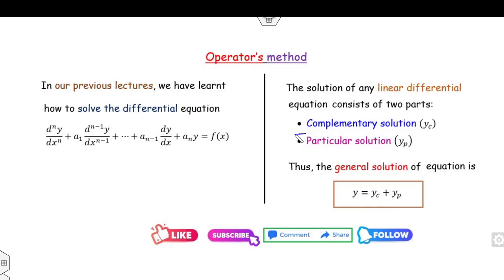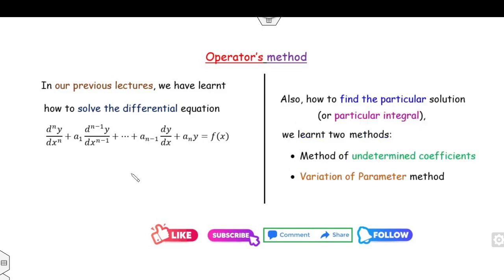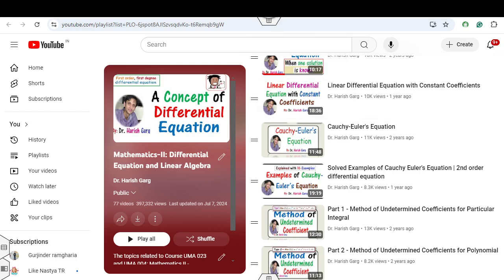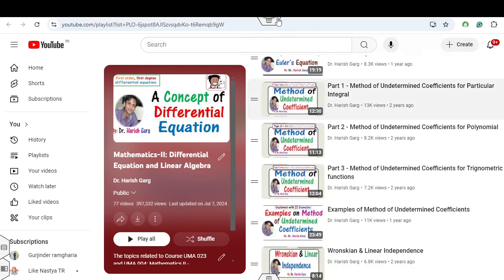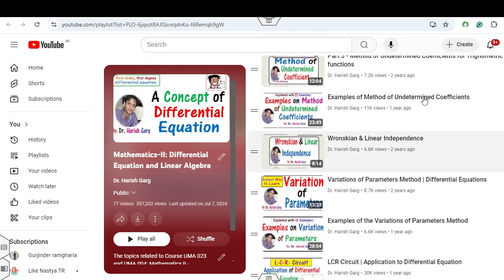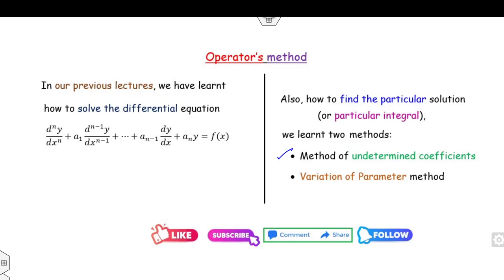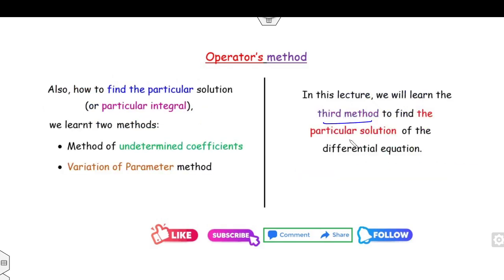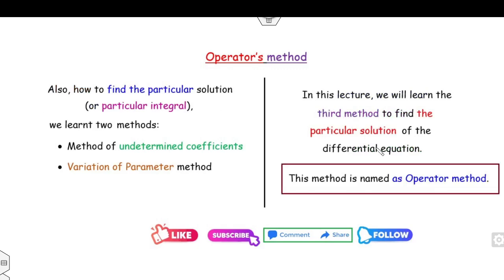The major question is how you can find the particular solution. We have already discussed two methods: the method of undetermined coefficients and the variation of parameters. You can see detailed lectures and examples in this playlist. Now in this lecture we will see the third method — how you can find the particular solution — and that method is known as the operator method.